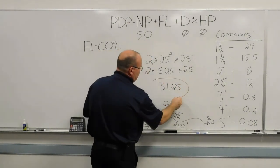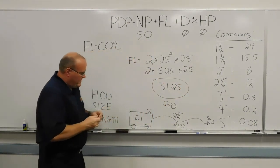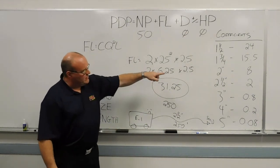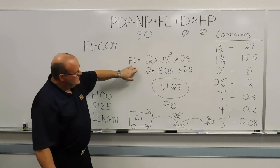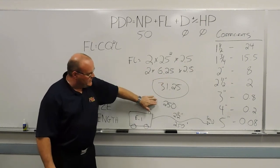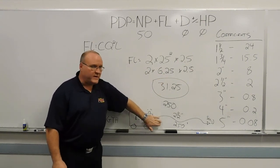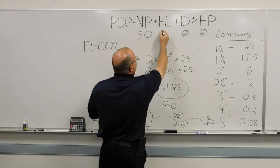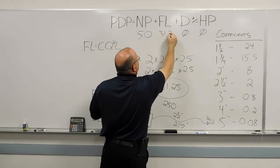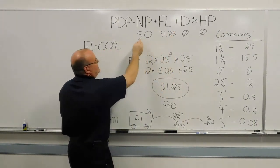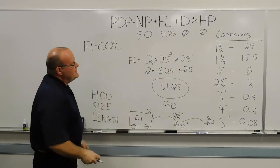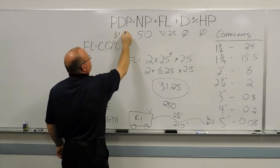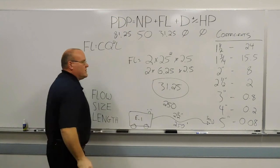So the total friction loss, using the coefficient method, from the discharge to the nozzle, using the coefficient of 2, gallon per minute of 250, length of 250 feet, 31.25. So we'll plug that up here in our friction loss. Add those two together because there's no devices and no head pressure. So we end up with 81.25 pounds pump discharge pressure.